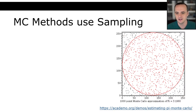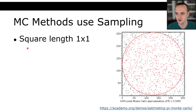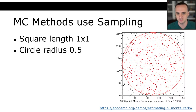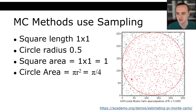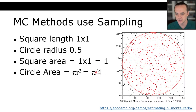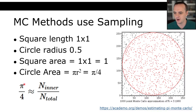We have a square with sides of length one. If we inscribe a circle in that square, the circle's radius is 0.5. The square's area is one times one, which is one. The circle's area is pi r squared, and since r is 0.5, that is pi over four. So pi over four is the ratio between the circle area and the area of the square. Pi over four is approximately equal to the area of the circle divided by the area of the square.